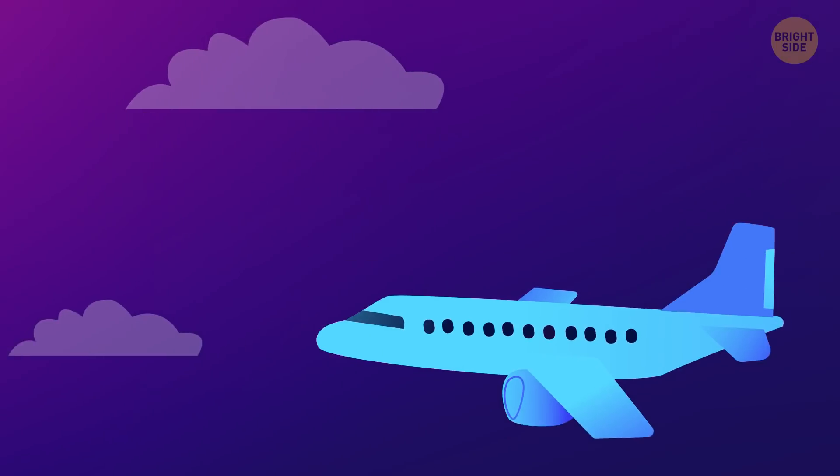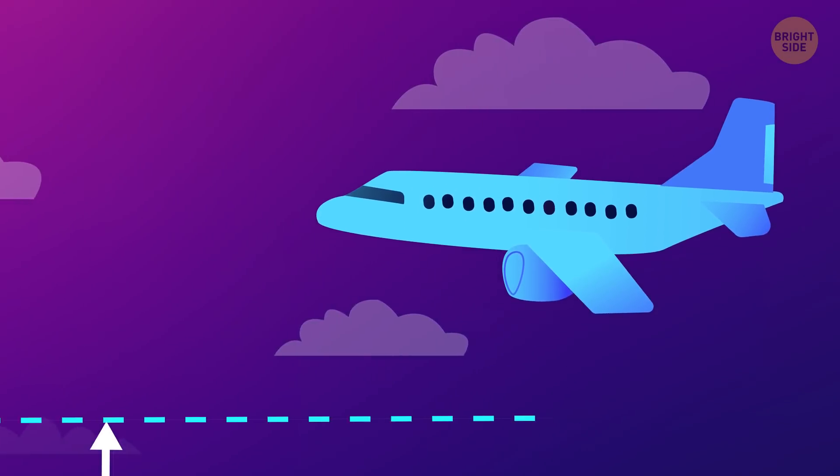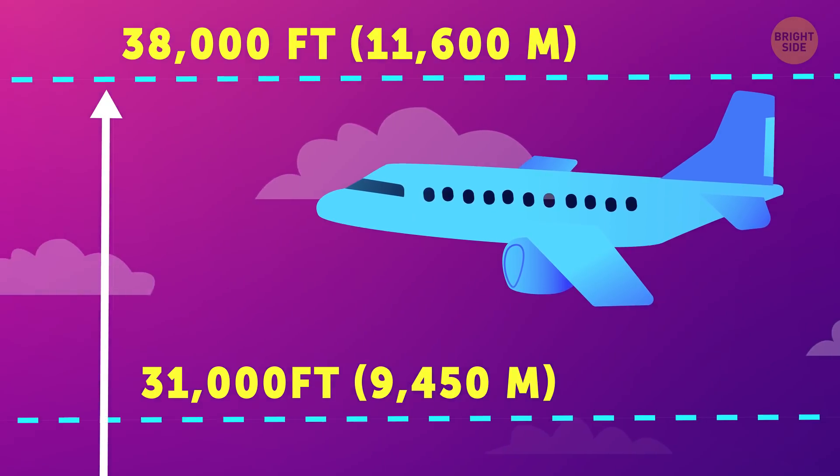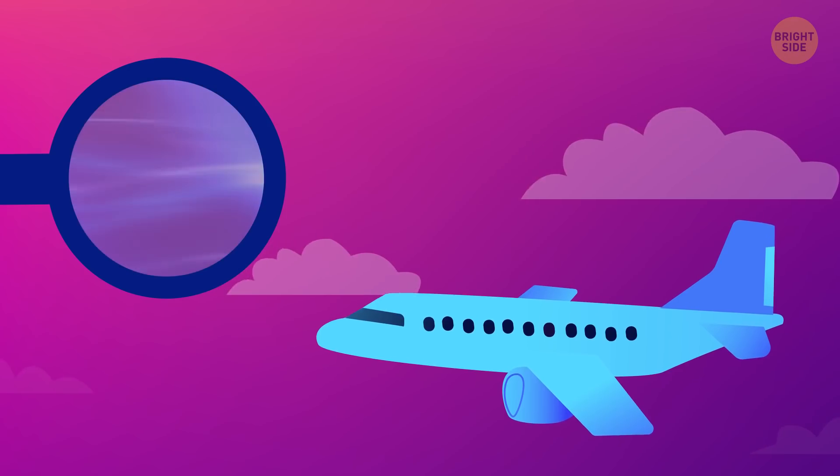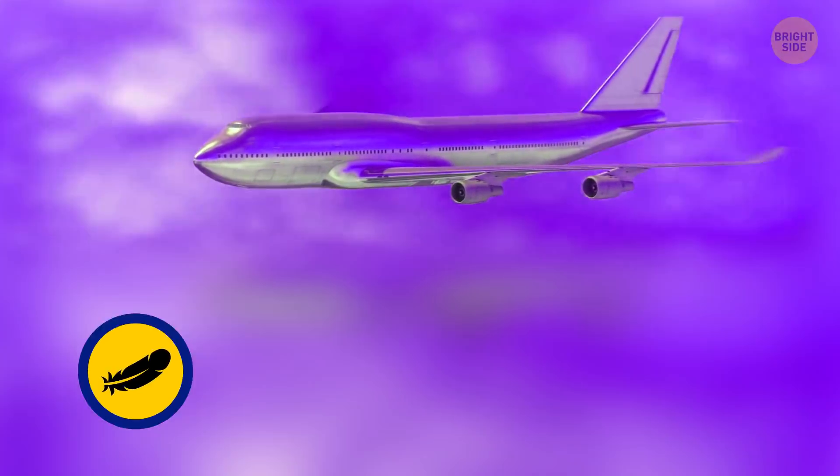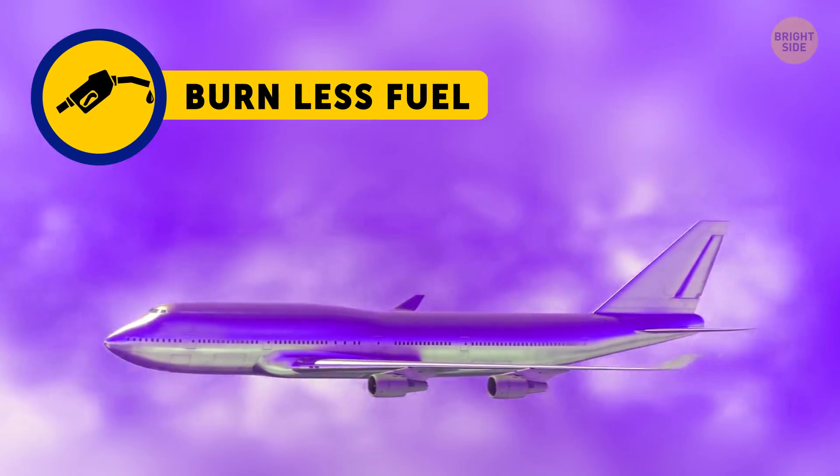So, you like to fly? Well, the average cruising altitude of a commercial airplane is between 31,000 and 38,000 feet. At this altitude, the air becomes thinner. As a result, aircraft can travel more easily, and even more importantly, burn less fuel.